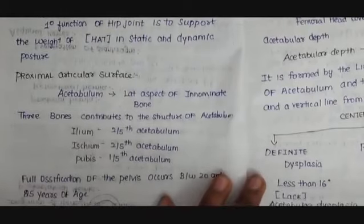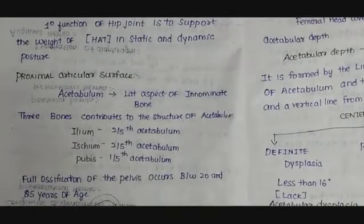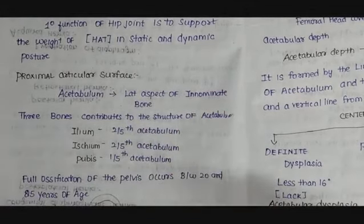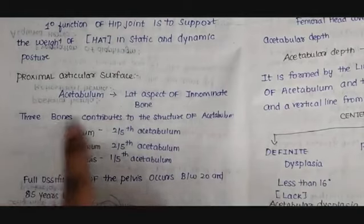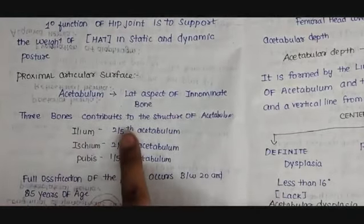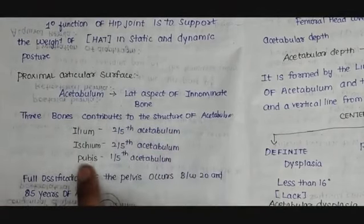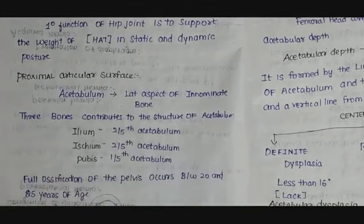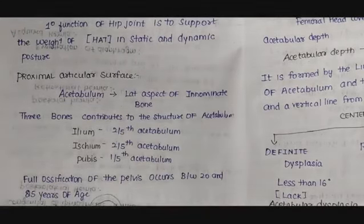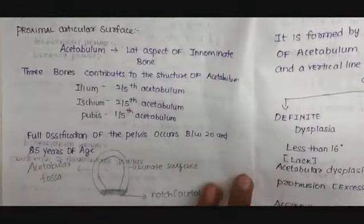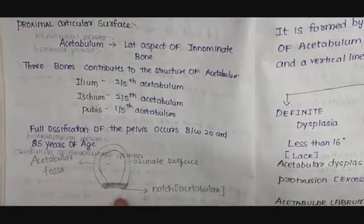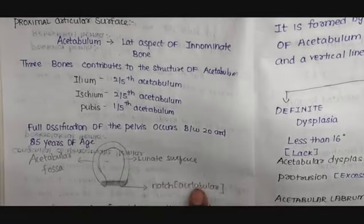Let us discuss about the proximal articular surface of the hip joint. The acetabulum, which is a horseshoe-shaped structure present on the lateral aspect of the pelvic bone, forms the proximal articular surface. Three bones contribute to the acetabulum: ilium contributes about 2/5th, ischium about 2/5th, and pubis about 1/5th. Full ossification of the pelvis occurs between 20 and 25 years of age. The acetabulum has three parts: the deeper most part, the periphery part, and the notch on the inferior aspect. The deeper part is the acetabular fossa, the peripheral part is the lunate surface, and the inferior notch is the acetabular notch.